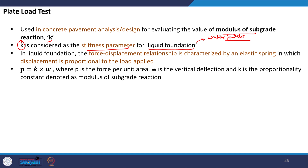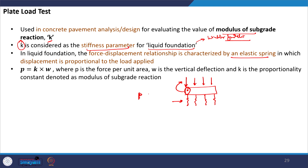The liquid foundation can be considered as the concrete slab resting on a set of springs. This foundation is characterized by elastic springs and the assumption is that the displacement at any particular point is proportional to the load at that particular point only and is not affected by the load at other points. This means P is equal to K times W, where K, the proportionality constant, is nothing but the modulus of subgrade reaction.